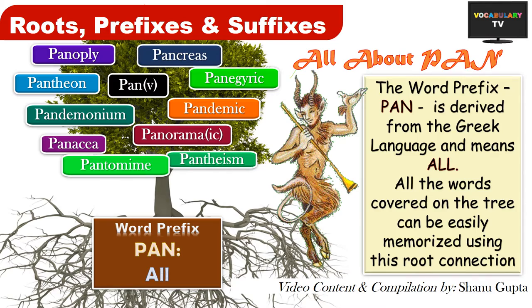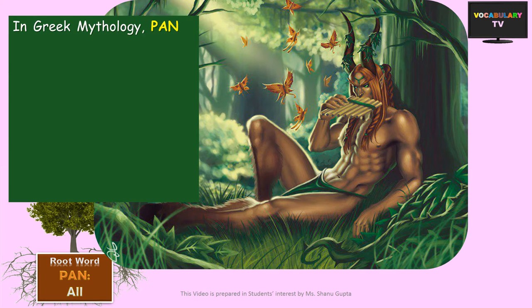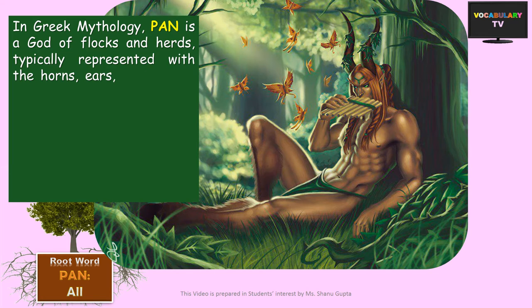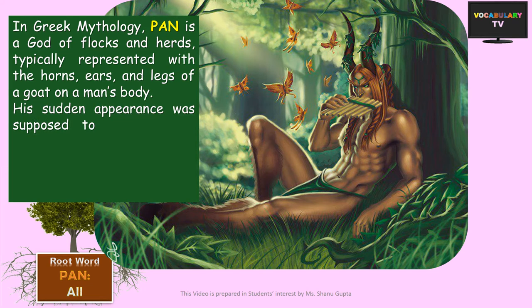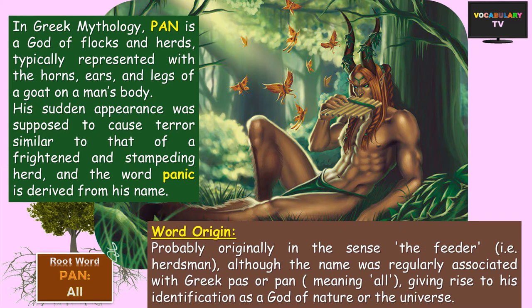Let's start with the word which is the root itself: Pan. Pan is an interesting word with multiple meanings. It mostly combines with other words at the beginning, which is why it's called a prefix — it lends the meaning 'all' to the main word. In Greek mythology, Pan is a god of flocks and herds, typically represented with the horns, ears, and legs of a goat on a man's body. His sudden appearances were supposed to cause terror similar to that of a frightened and stampeding herd, and so the word Panic is derived from his name.